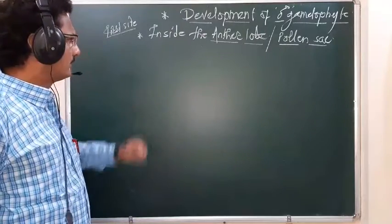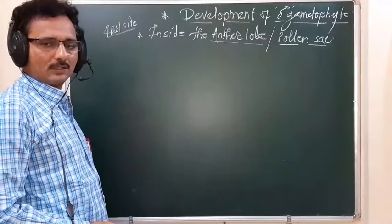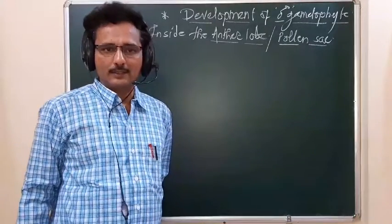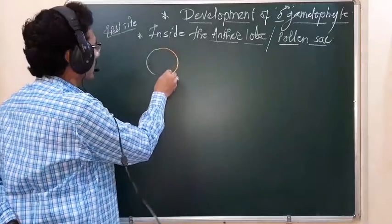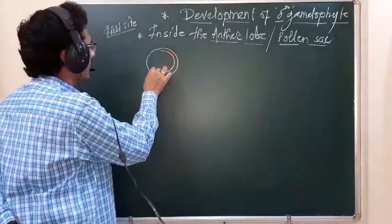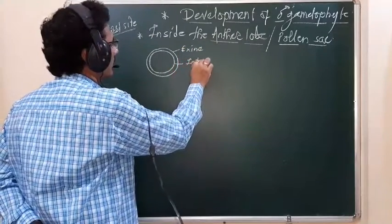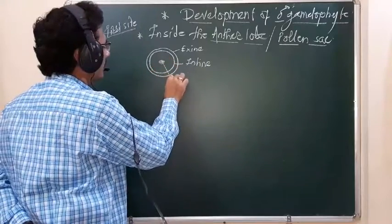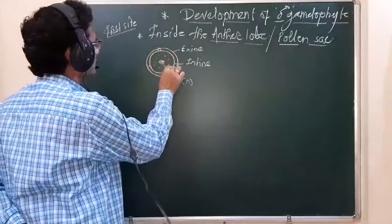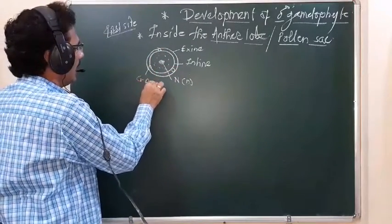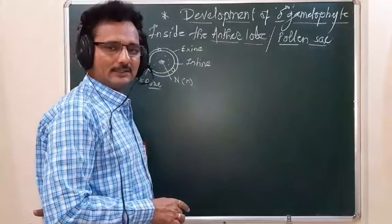Inside the pollen sac, just after the meiotic division, we have haploid pollen grains. Those haploid pollen grains are unicellular, uninucleated, and haploid. They have an exine, intine, a centrally placed haploid nucleus, cell cytosol, and germ pores. The process by which pollen grains are generated inside the pollen sac is called microsporogenesis.